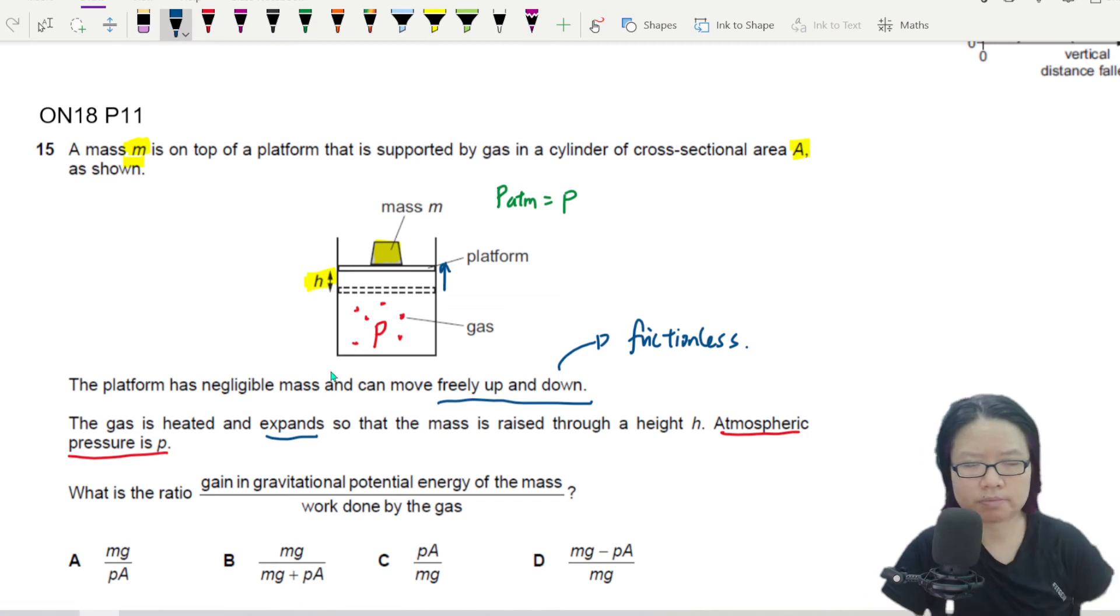First things first, I'm going to write out the equation. So gain in GPE is fairly straightforward. I'm just going to write change in GPE. This is fairly straightforward. You will take mgh divided by work done by the gas.